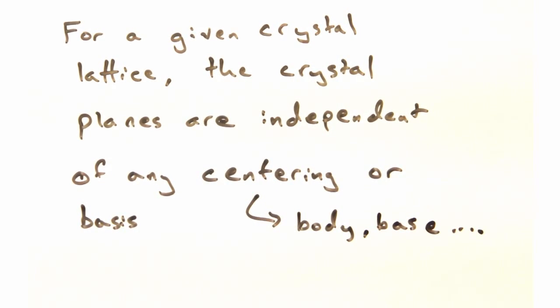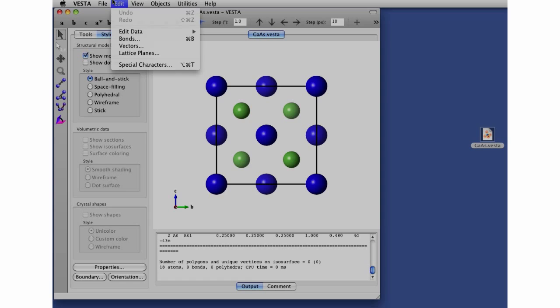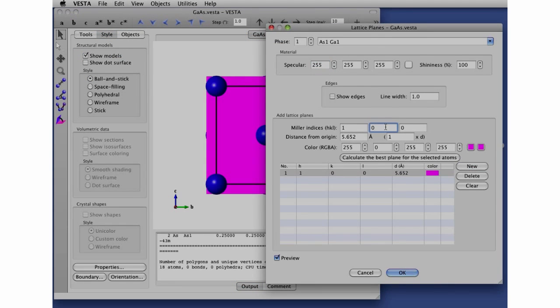Before we wrap up, let me point out how to show planes in VESTA. Here, we load in a cell. Then we click Edit Lattice Planes. Create a new one, and assign the HKL values you want.